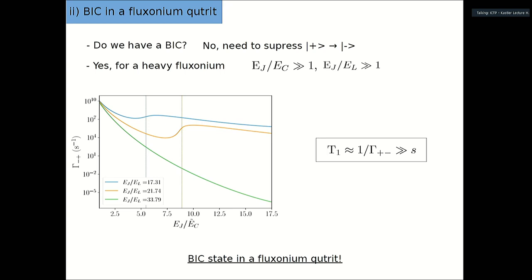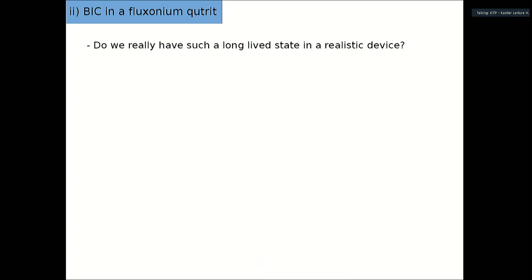So in principle, it seems we can have a BIC in the fluxonium qutrit. But are those huge decay times realistic? Probably many of you who are experimentalists will say — as the previous speaker noted — that in theory you can do whatever you want, but in practice probably not. There is going to be noise. What happens with the noise?